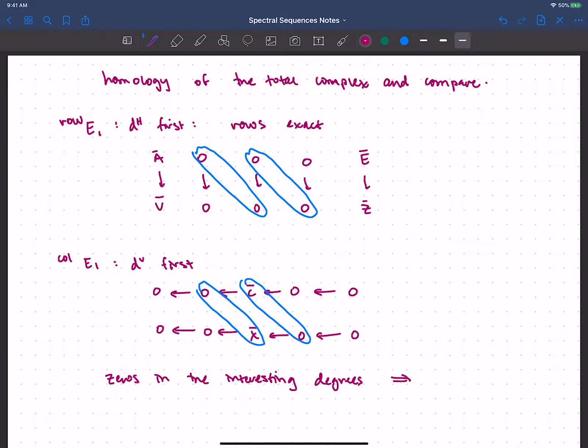And remember that these converge to associated gradeds of the same thing, now maybe corresponding to different filtrations. But there are no extension problems for zero by zero, right? So it's got to be zero in those degrees based on these cases.